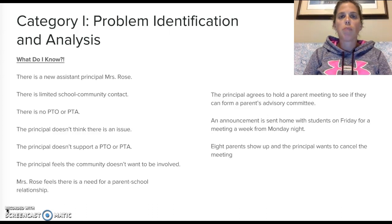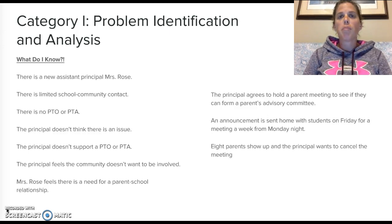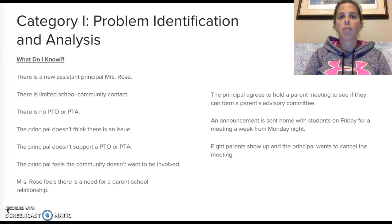Mrs. Rose, based on the classes she has taken, feels there is a need for a parent-school relationship. The principal eventually agrees to hold a parent meeting to see if they can form a parent advisory committee — not a PTO or PTA, but maybe just a parent committee. An announcement is sent home with students on a Friday for a meeting the upcoming Monday, giving parents about a week of notice. Eight parents show up to the meeting and the principal feels maybe they should cancel it.